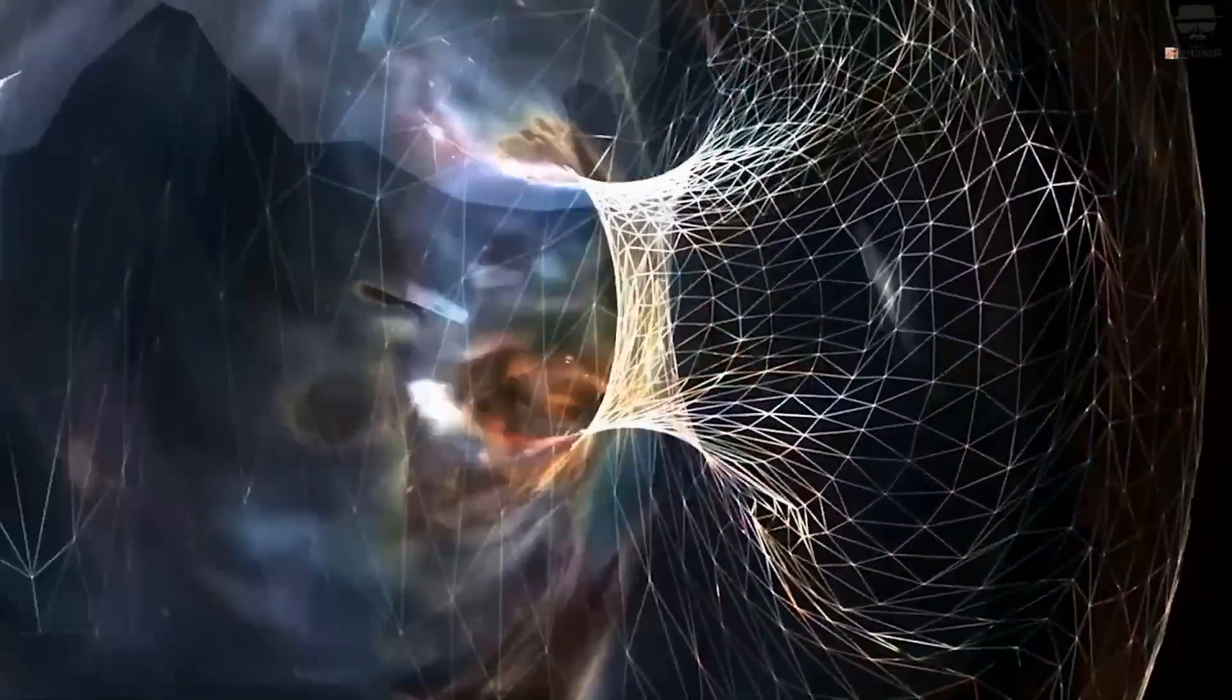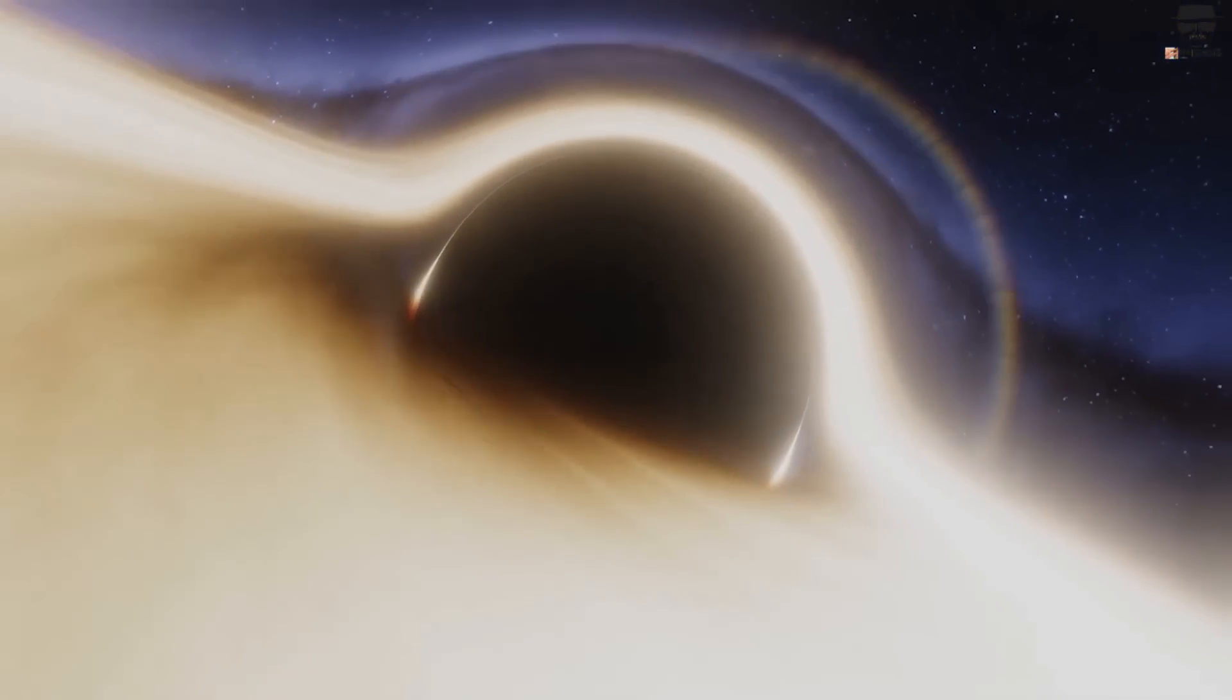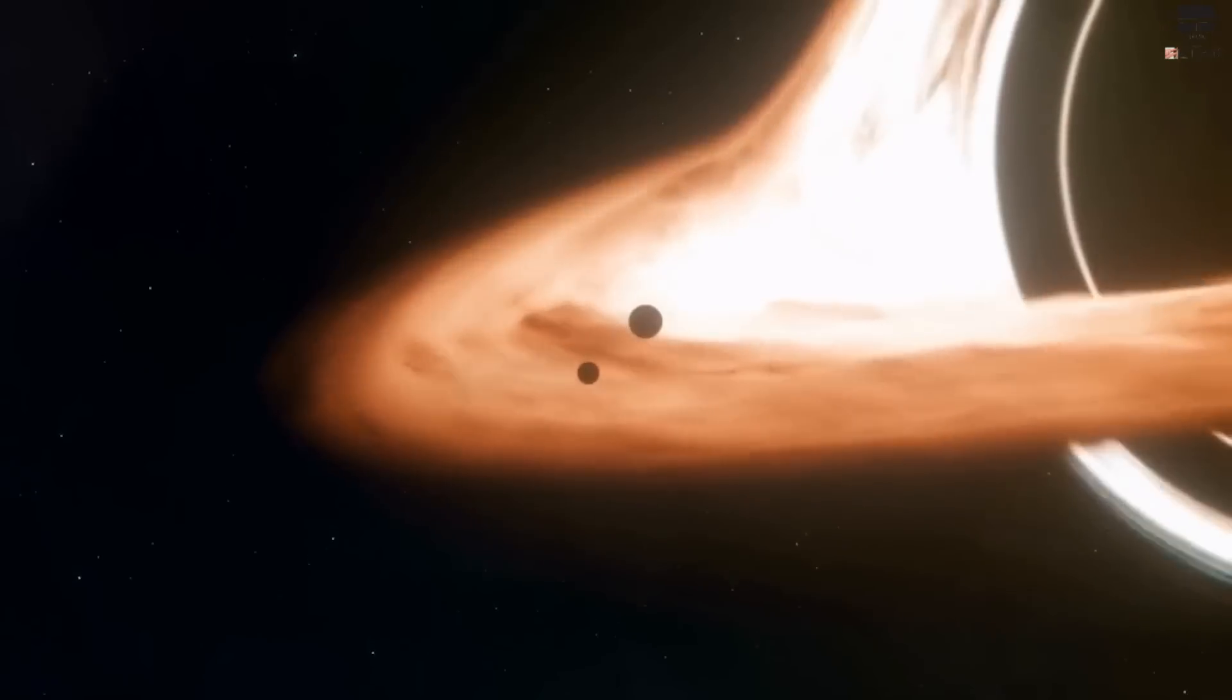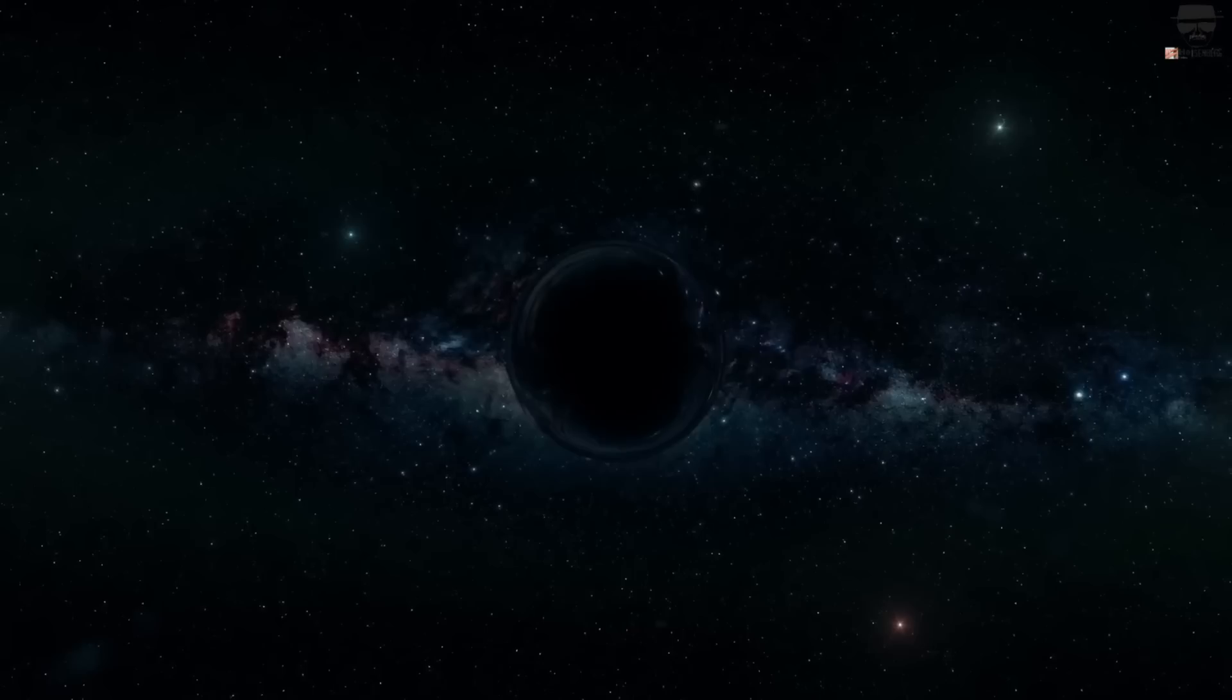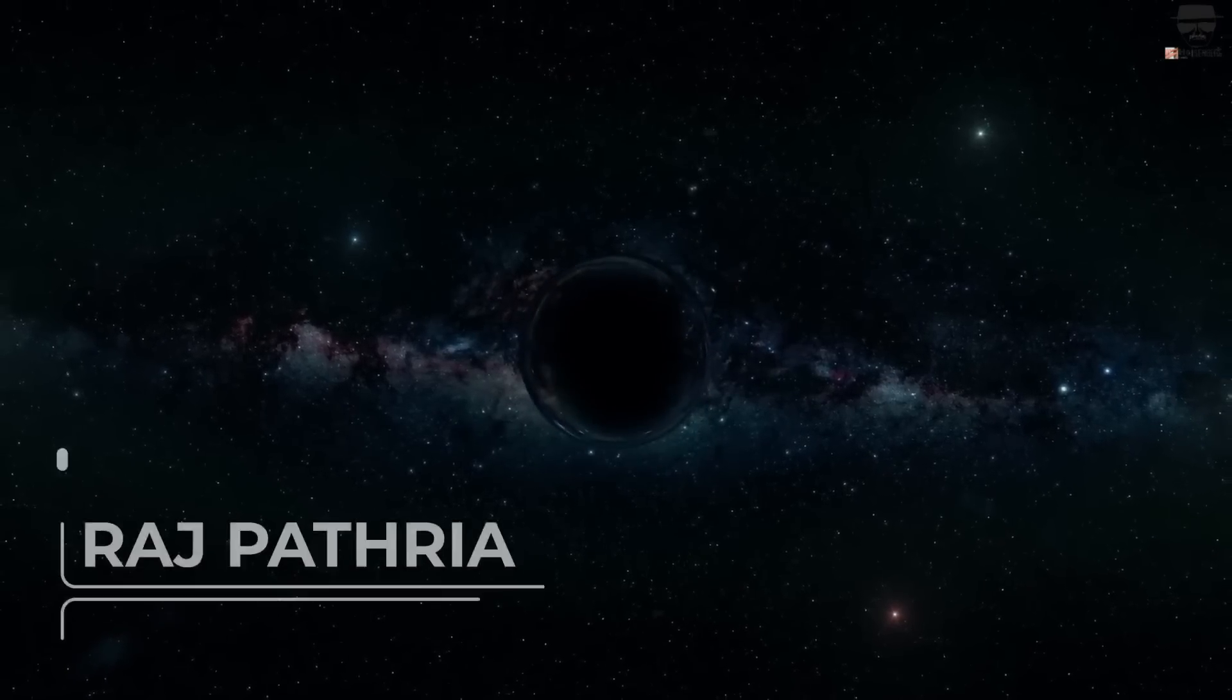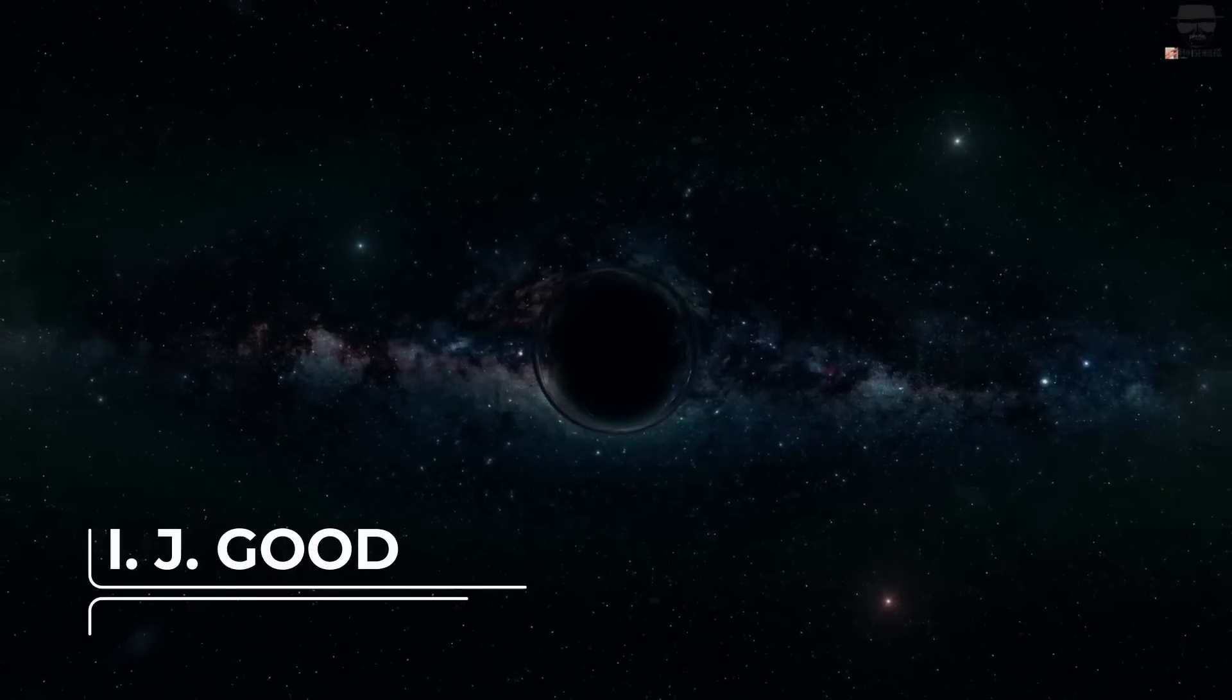A black hole cosmology, also called Schwarzschild cosmology or black hole cosmological model, is a cosmological model in which the observable universe is in the interior of a black hole. Such models were originally proposed by theoretical physicist Raj Pathria and concurrently by mathematician I.J. Good.